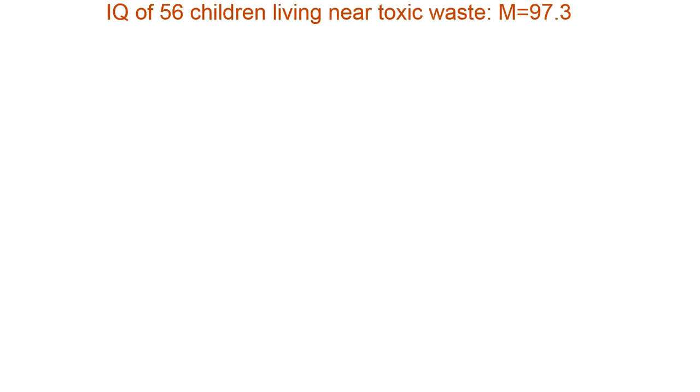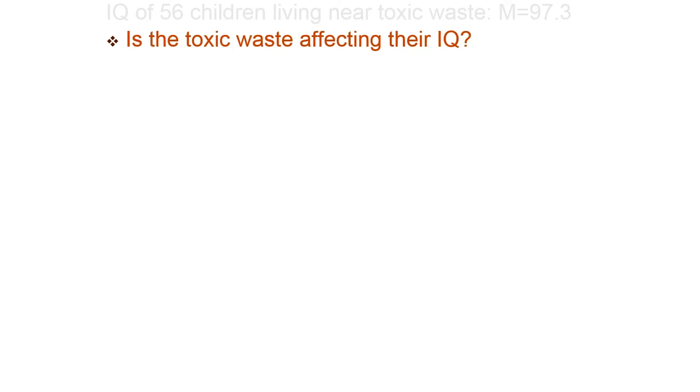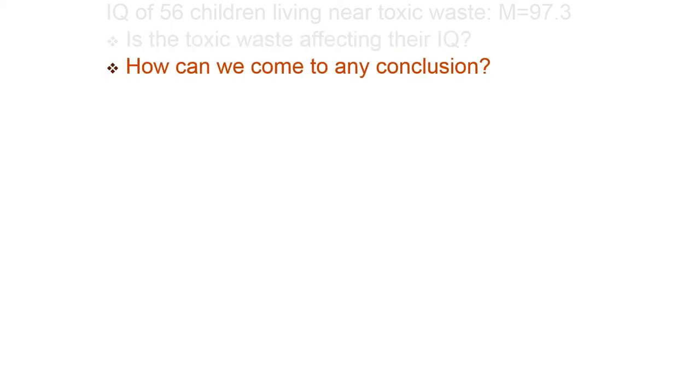So anyway, here's an example of the kind of inference we would use. Let's say you collect the IQ, you measure the IQ of 56 children who are living near some toxic waste, and you find that the mean, I used an M here because I hadn't figured out how to do X-bar. Actually, you couldn't really do it before the past couple of years in Excel. The mean is 97.3 IQ. That's slightly lower than average. Average mean is 100. So is the toxic waste affecting their IQ? So how can we come to any conclusion? At this point, you should have a pretty good idea that we can formulate the null and the alternative hypotheses and calculate the probability of observing a mean that low or lower than the national average if the null hypothesis is not true.